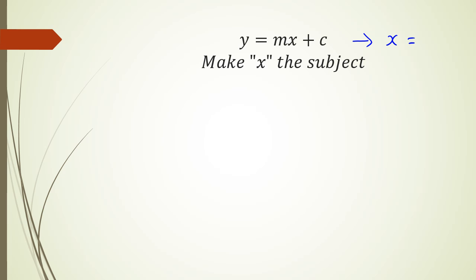The first method: looking at y = mx + c, the two things I need to get rid of so x is by itself are m and c. Going back to priority of operations — x is first multiplied by m, then c is added. So working backwards, I need to get rid of c first, then m.